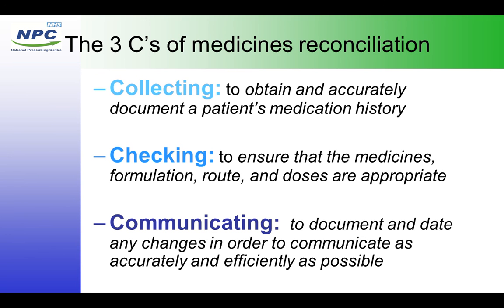There are three C's that the NPC came up with: collecting information — which can be from a number of sources; checking the information to make sure it's appropriate and cross-referencing different sources against each other; and the final and most important one — communicating that information. The best way to do that is by a written order, either on the PMR system in a community pharmacy or in the medical notes in a hospital. It's vitally important that every practitioner who is going to look after that patient has access to an accurate drug history.